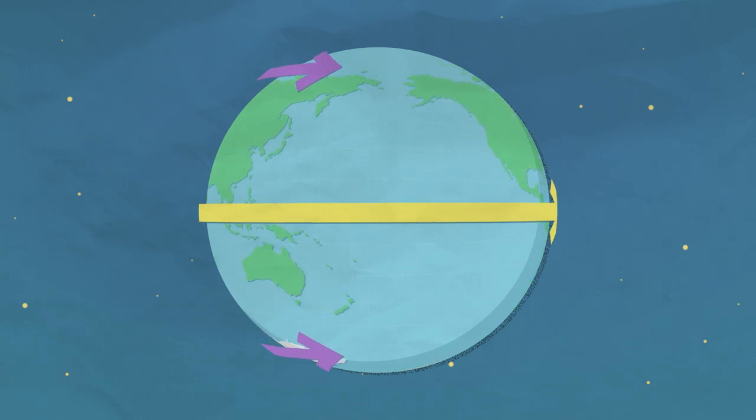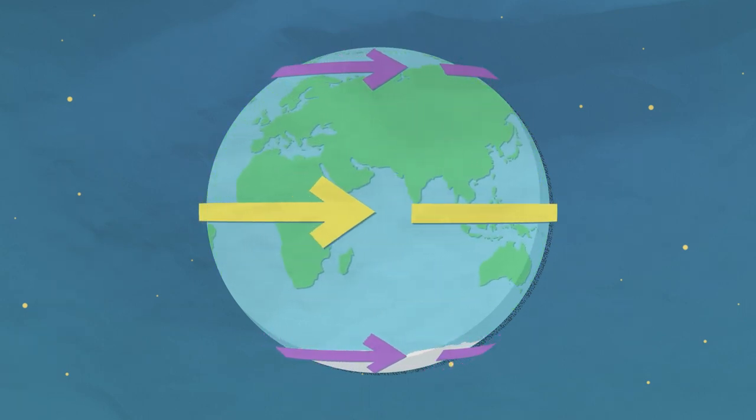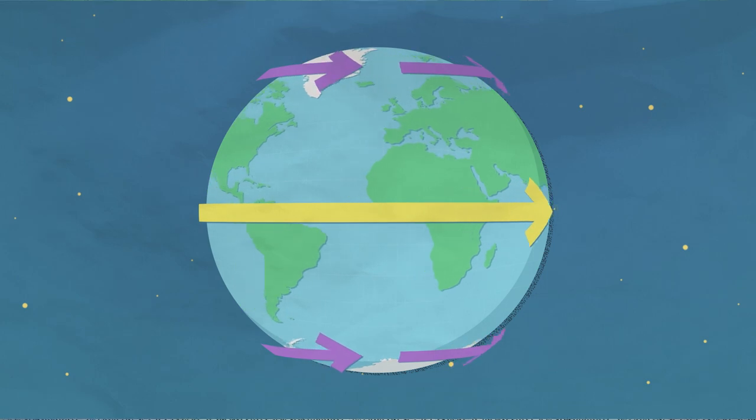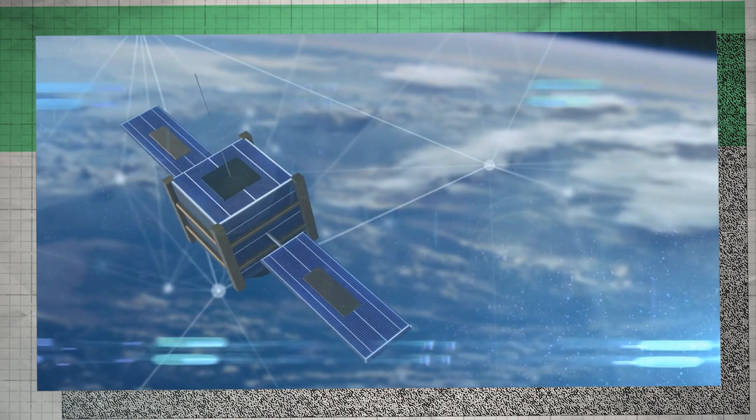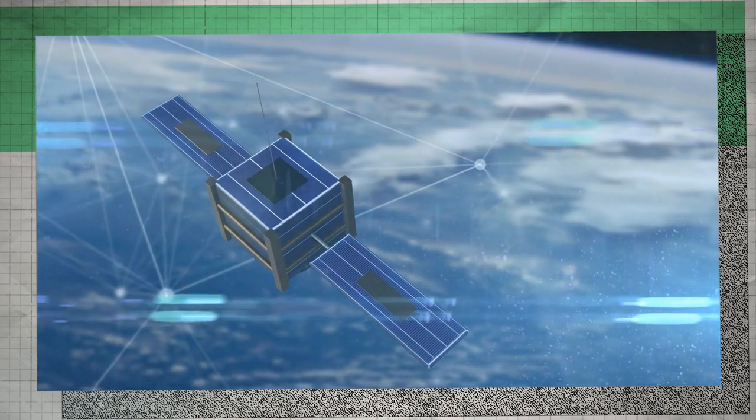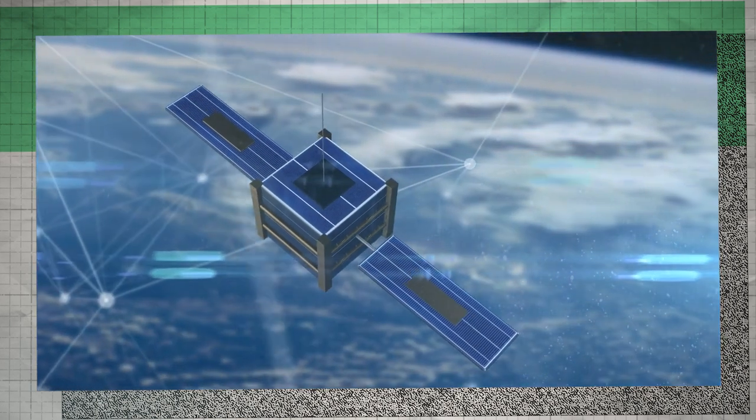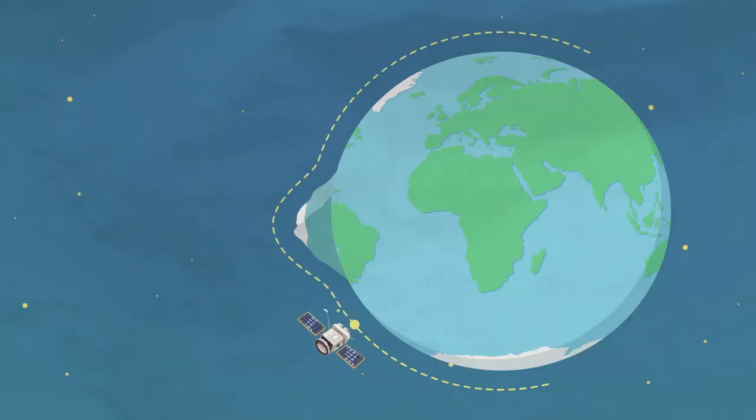We can measure the shape of the Earth, we can measure its gravity field, thanks to satellite technology. The satellite's orbit is determined by the attraction of the Earth on that satellite. So if we can track a satellite precisely, what we will see is that its orbit isn't a nice elliptical, but you'll see little wiggles on it.